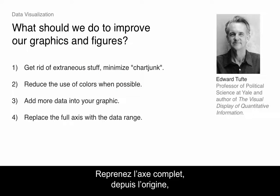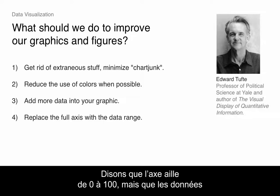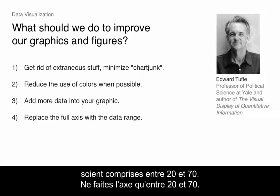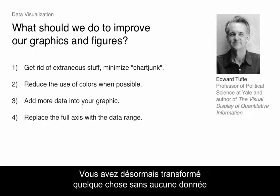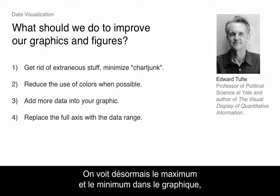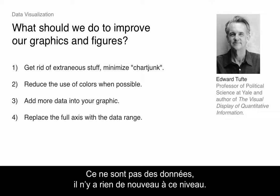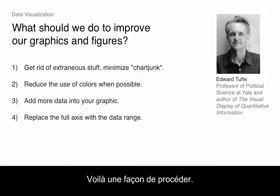Replace the full axis going to the origin with just the data range. If the axis goes from 0 to 100 but all your data is between 20 and 70, only plot the axis from 20 to 70. Now you've taken something that had no data and made it data — it tells you the max and the min. How much did you lose by doing that? Actually you've gained. Everybody knows where lines would intersect at zero, but that isn't data. There's nothing new there.